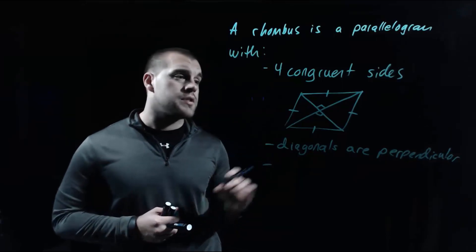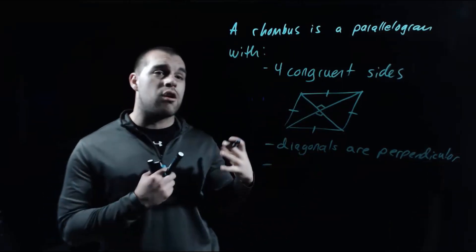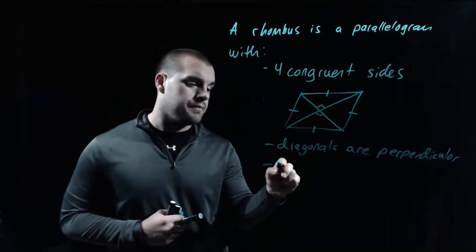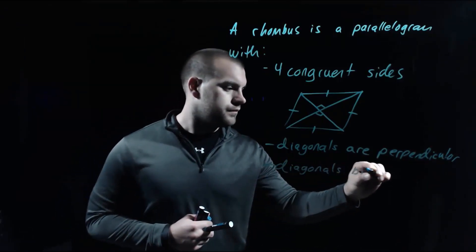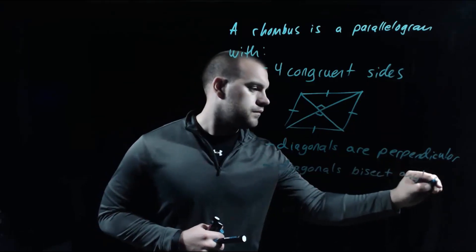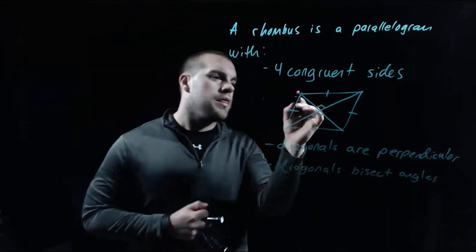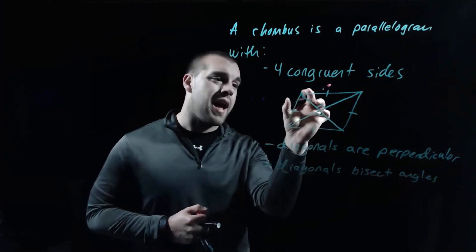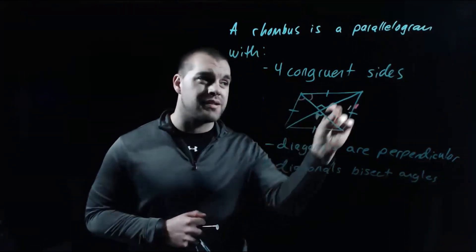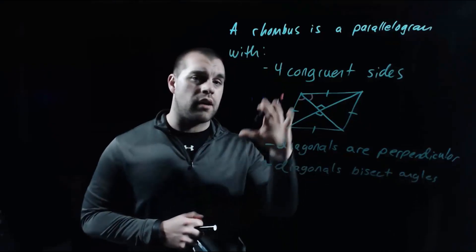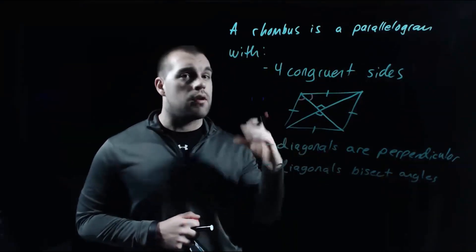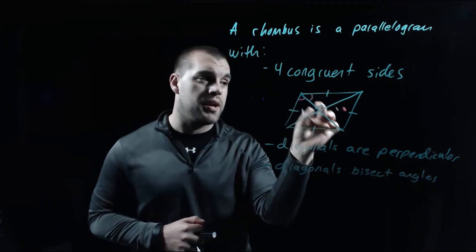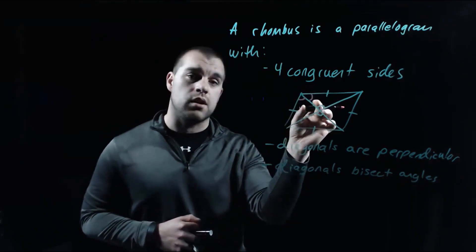Another property with the diagonals is that when we draw them in, they also bisect each of the angles around the outside. So this piece of the angle here would be exactly the same size as this piece — that diagonal is splitting the obtuse angle into two congruent pieces, and that's going to be true for all of the angles around the outside of our picture. Each individual piece when we draw that diagonal in has to be congruent to the other.